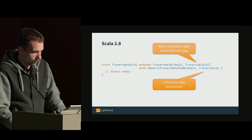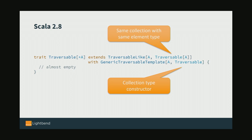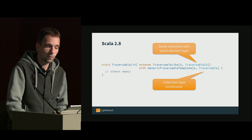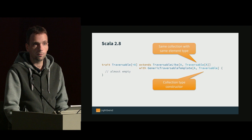Then we have another sub-trait called Traversable, which requires that you can traverse it multiple times. It's implemented in terms of two helper traits: TraversableLike and GenericTraversableTemplate. Both are parameterized by the element type, and TraversableLike also takes the specific collection type — in this case Traversable of A — whereas GenericTraversableTemplate takes the type constructor, which is just Traversable.